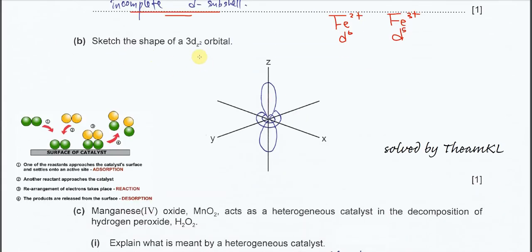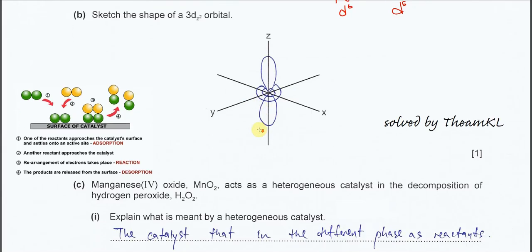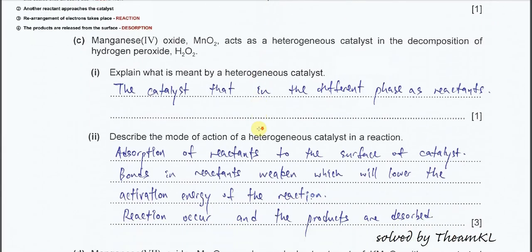Part B: Sketch the shape of 3dz². This one is very specific because it's asking a particular d orbital. For this dz² orbital, you need to draw two lobes along the z-axis and you just need to draw a donut ring right in the middle. This is how the dz² looks like.